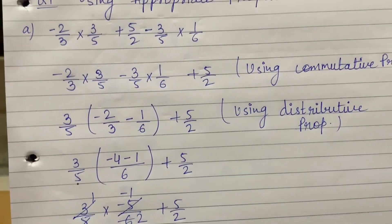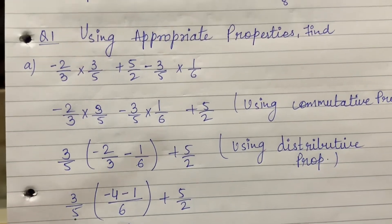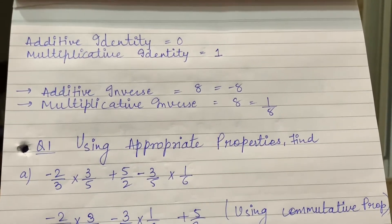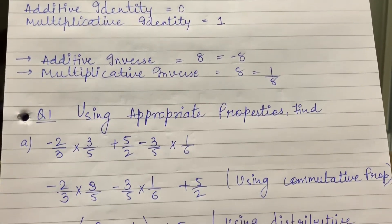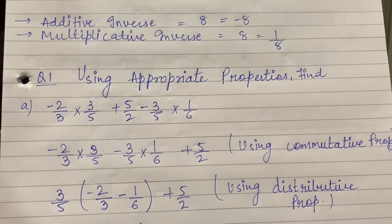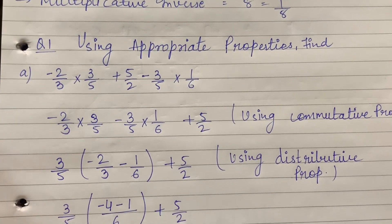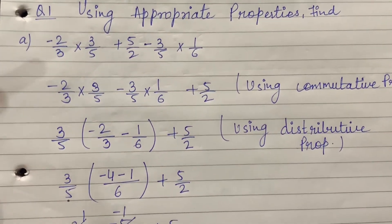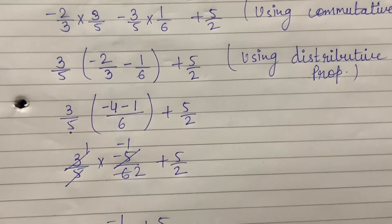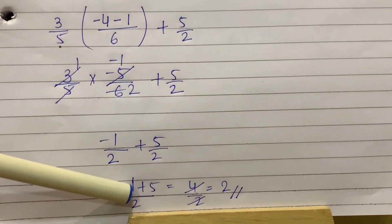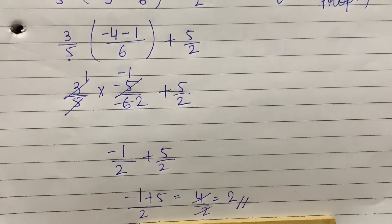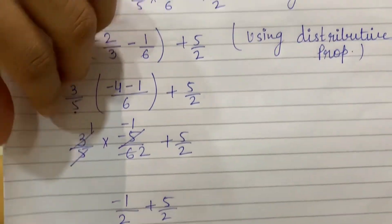So for property-based sums, first use commutative property to arrange the terms, then take out common factor and use distributive property inside the bracket, and then solve the sum appropriately. Our final result is 2. Similarly, let us solve one more sum so that clarity comes.